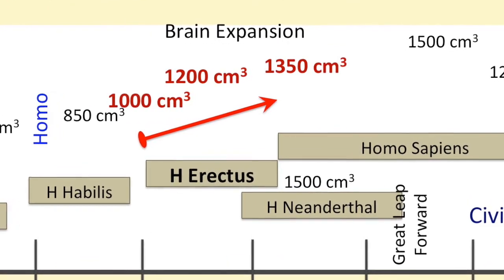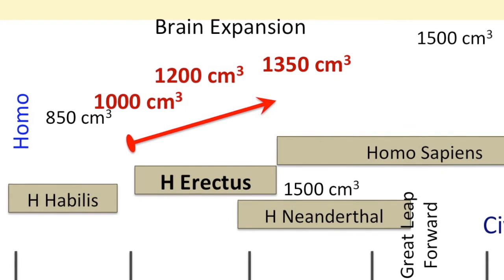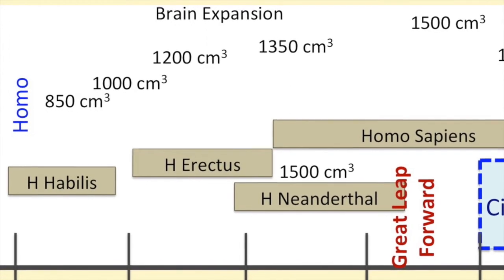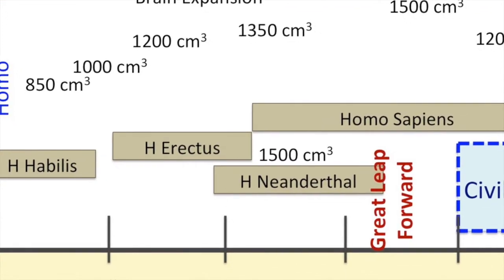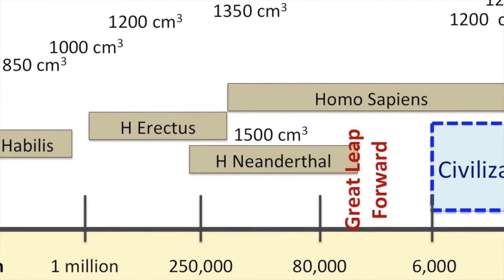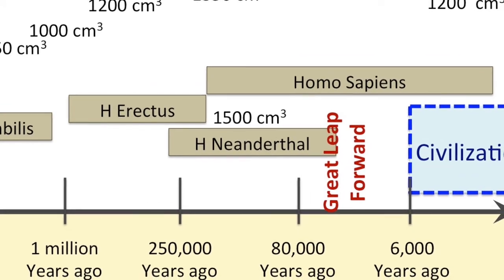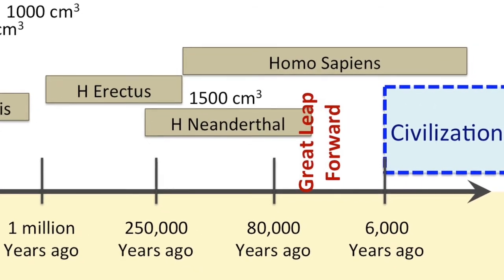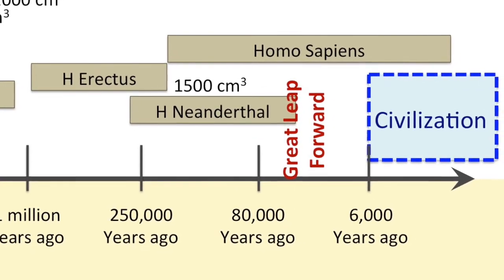Note: while we do know from skeletal records the size of Paleolithic man's brains, we do not know anything about the complexity of their brains. Now let's put the timeline of human evolution into perspective. We've been evolving for about two million years as hunter-gatherers. 40,000 years ago we had the behavioral great leap forward, with a shift from hunter-gatherer to agricultural living about 10,000 years ago. 6,000 years ago we started getting civilized. 3,000 years ago we started thinking deep thoughts. The time span of human civilization is but a blink of an eye in evolutionary timescales.